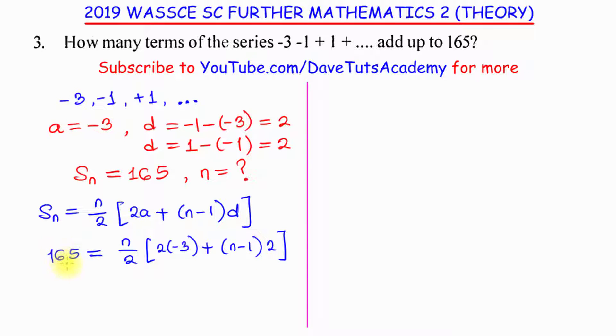If 2 is multiplying 165, that would be 320, then 10, 330. So, we have 330 is equal to n multiplied by 2 times minus 3 is minus 6. Then, plus 2 times n is 2n, minus 1 times 2 is minus 2. So, we can say we want to open that bracket and we have 330 is equal to n multiplied by 2n. Minus 6 and minus 2, we add up to minus 8.